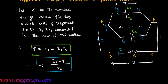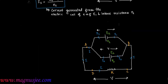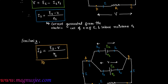I1 equals (E1 minus V) divided by r1, where r1 is the internal resistance of the first cell. Similarly, the current generated from the electric cell of EMF E2 and internal resistance r2 is I2, which equals (E2 minus V) divided by r2. That is the current coming from the second cell of EMF E2 and internal resistance r2.